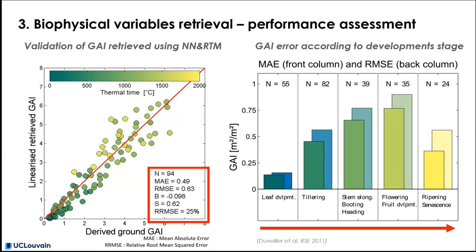It shows rather bigger error for the more yellowish points, which correspond to the most advanced canopy development stages. The right graph shows the explanation by plotting the GAI error according to the development stages, and showing that for the full development stages and the plant senescence stage, we can find the most contributing error in the model.